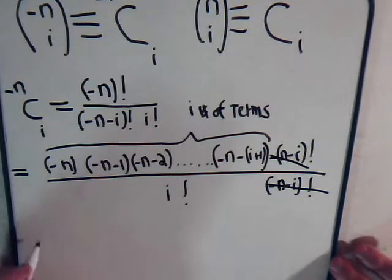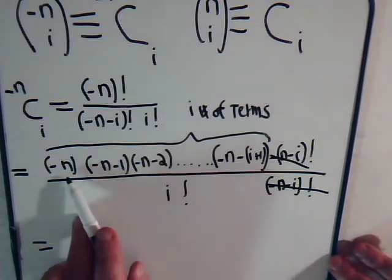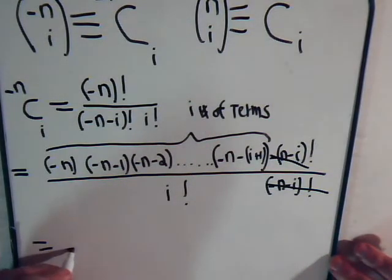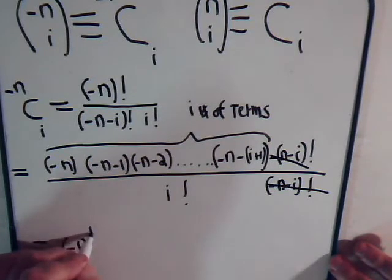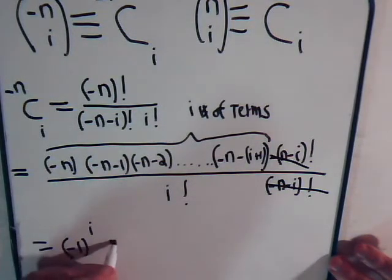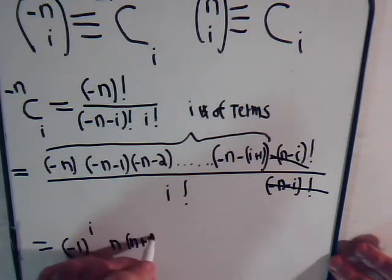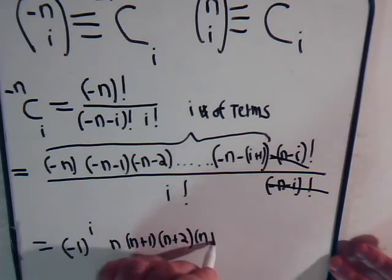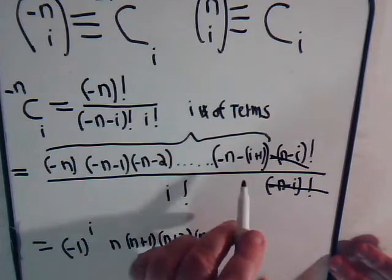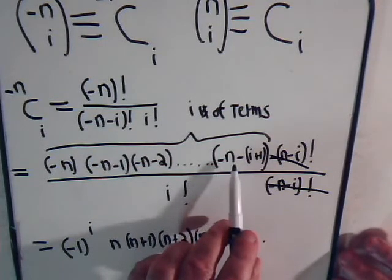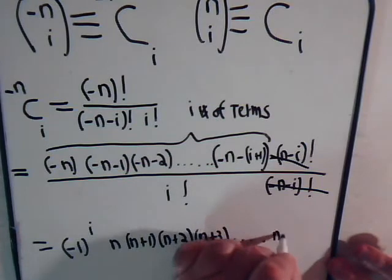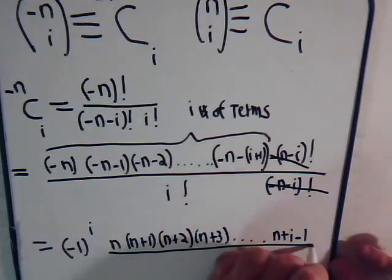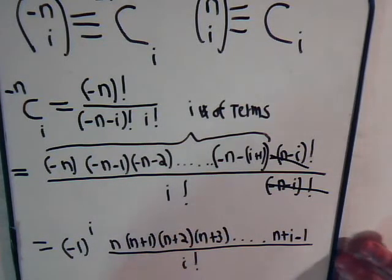In each one of these factors, we can factor out a negative 1: this gives us plus n, n plus 1, n plus 2, up to n plus i minus 1. So this equals minus 1 to the i times n times n plus 1 times n plus 2 times n plus 3, going all the way out to n plus i minus 1.